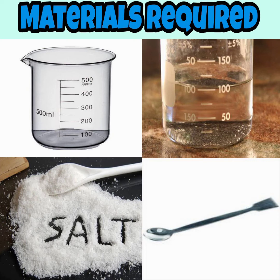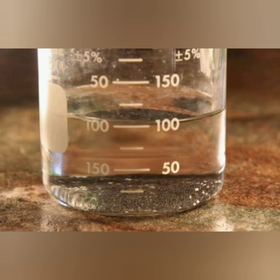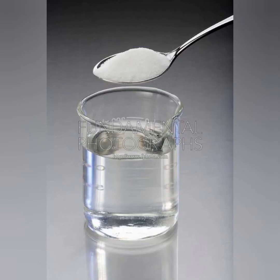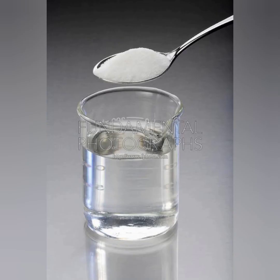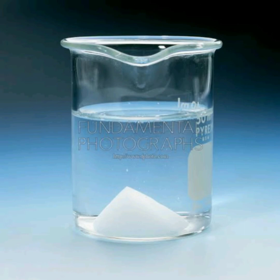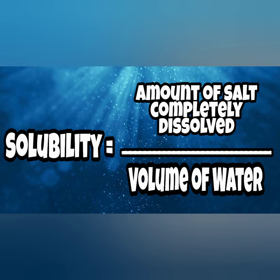Here is what we do: take 100 ml of water in the beaker and add 5 grams of salt — that is about 1 teaspoon — and stir it well. It will dissolve completely. Add another 5 grams of salt and stir again. Repeat the process until the salt no longer dissolves and you can see salt particles. Note how many spoons of salt make the solution saturated. Solubility equals the amount of salt completely dissolved divided by the volume of water.